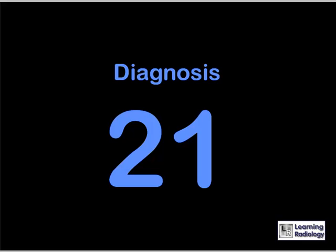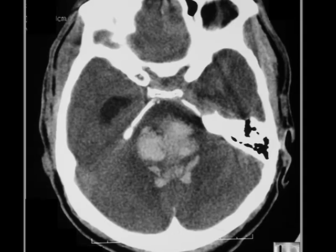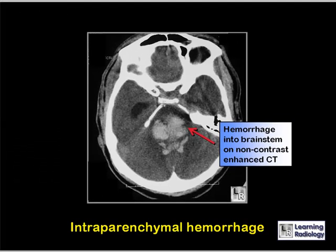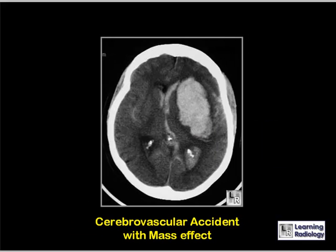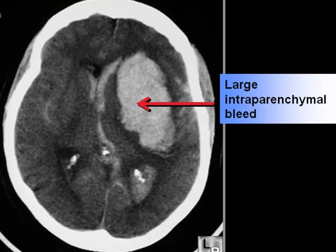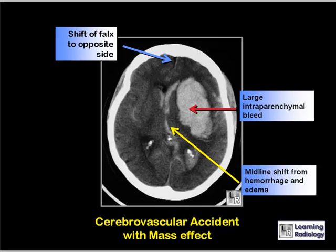Why does this 72-year-old have slurred speech? There is a large hemorrhage into the brainstem seen on non-contrast enhanced CT — this is an intraparenchymal hemorrhage. In another example, the red arrow points to the large intraparenchymal bleed, the yellow arrow to the midline shift from the combination of hemorrhage and edema, and the blue arrow to the shift of the falx to the opposite side.